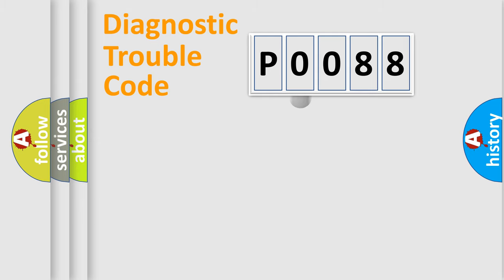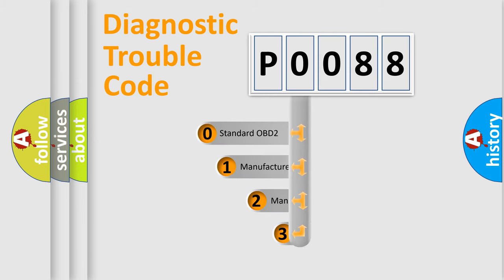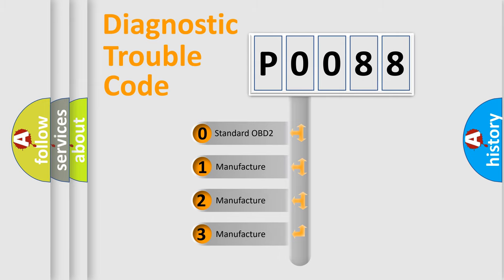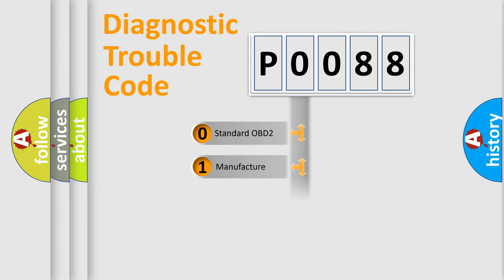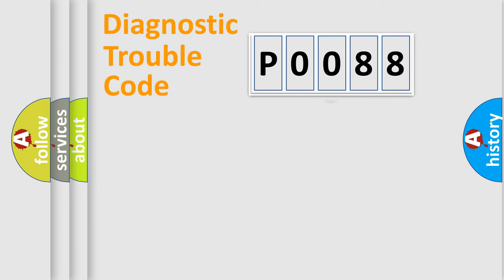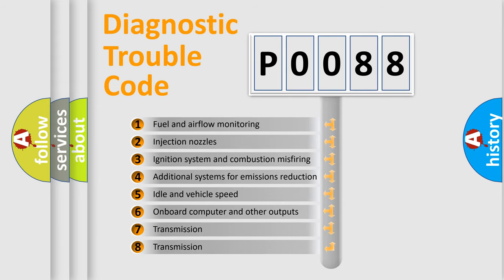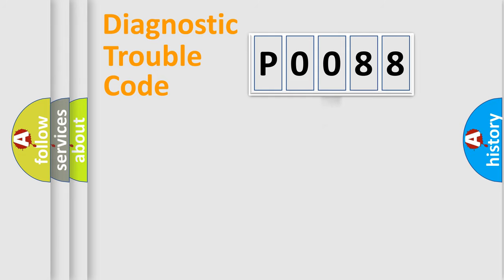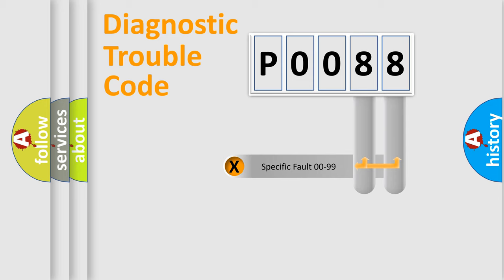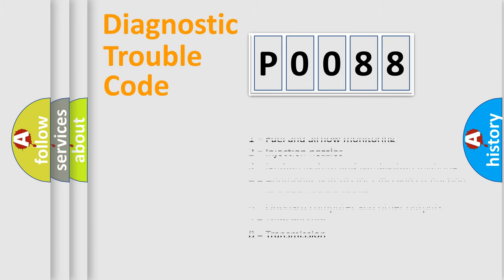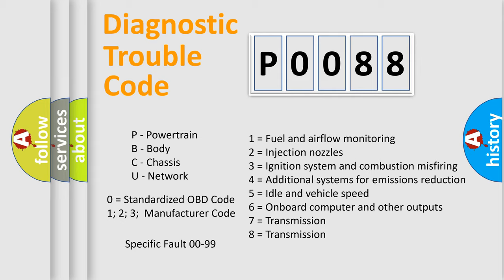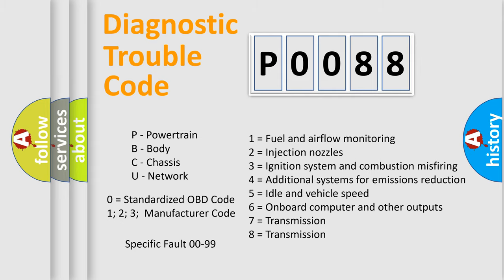This distribution is defined in the first character of the code. If the second character is expressed as zero, it is a standardized error. In the case of numbers 1, 2, or 3, it is a more specific car-manufacturer expression of the error. The third character specifies a subset of errors. Only the last two characters define the specific fault of the group. This division is valid only if the second character code is expressed by the number zero.